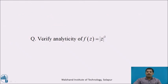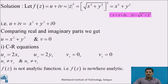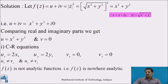Now pause this video and verify the analyticity of f(z) = |z|². The problem is to check whether f(z) = |z|² is analytic or not. We denote this function as f(z) = u + iv, where z = x + iy. The modulus of z is defined as √(x² + y²), so |z|² = x² + y².